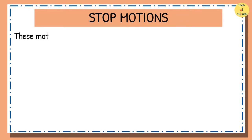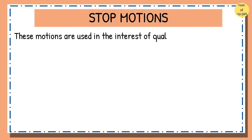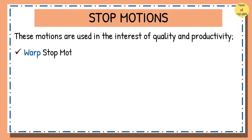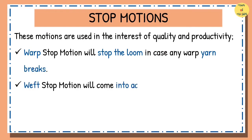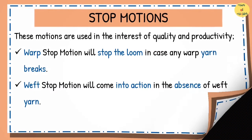Stop motions are used in the interest of quality and productivity by stopping the loom immediately in case of some problem. The warp stop motion will stop the loom in case any warp yarn breaks, avoiding excessive damage to the warp threads. Similarly, the weft stop motion will come into action in the absence of weft yarn and stop the loom.